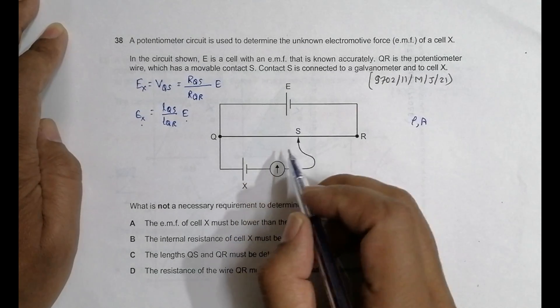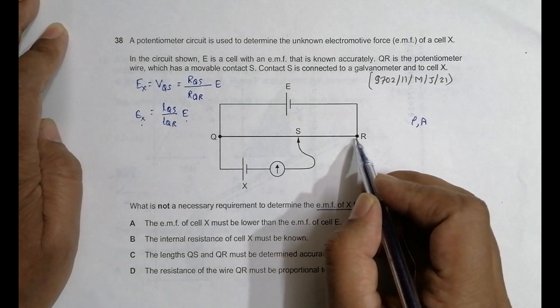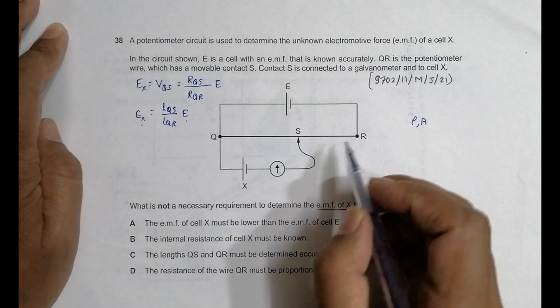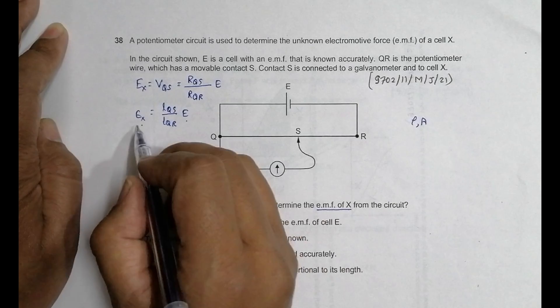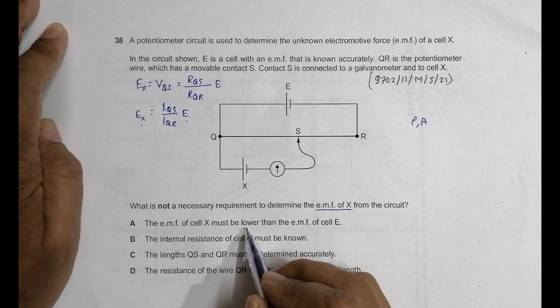EX should be definitely less than E, otherwise it cannot balance. If even if we take it here, it cannot be balanced. So if it balances somewhere, it means that EX should be less than this E. So this is a necessary condition.